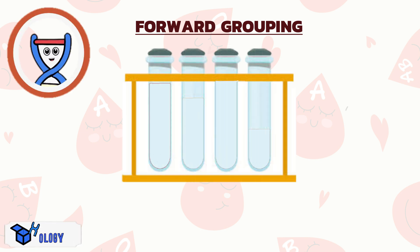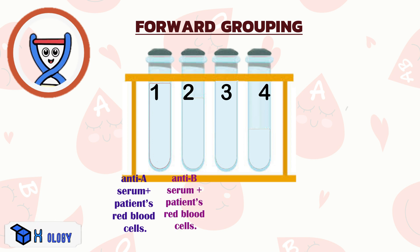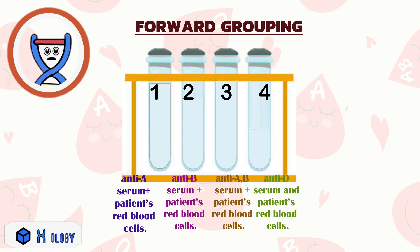In forward grouping, four distinct tubes are prepared. Tube 1 contains anti-A serum and the patient's red blood cells. Tube 2 contains anti-B serum and the patient's red blood cells. Tube 3 contains anti-AB serum and the patient's red blood cells. Tube 4 contains anti-D serum and the patient's red blood cells. Based on the agglutination patterns observed, the ABO blood group is determined.